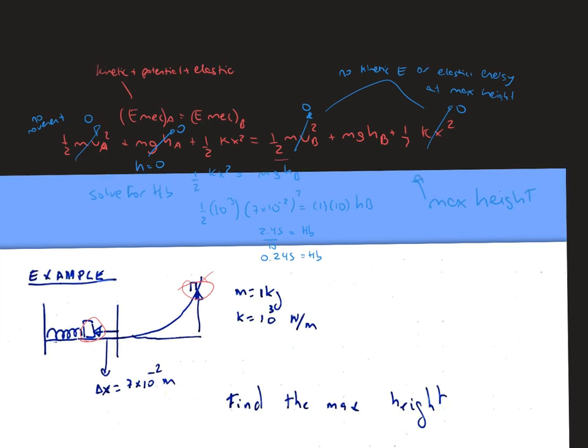Then we're going to have the same terms on the other side: one-half m v_B² plus m g h_B plus one-half k x².